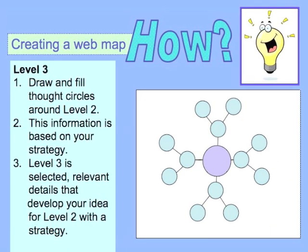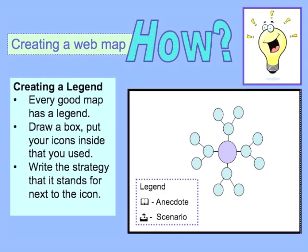Now for level three. Draw and fill thought circles around the level two bubbles. This information is based on your strategy. Level three is selected and relevant details that you will use to develop your level two ideas.